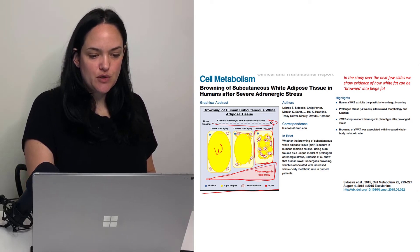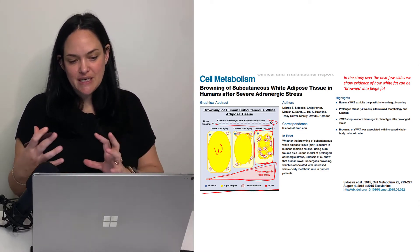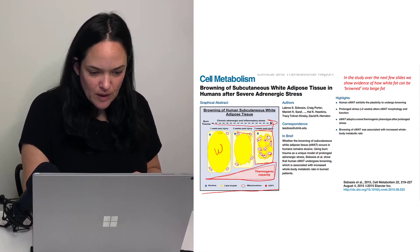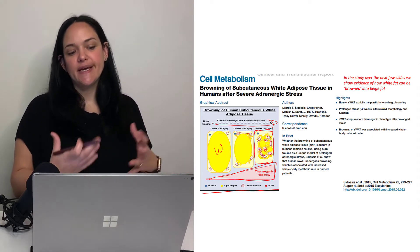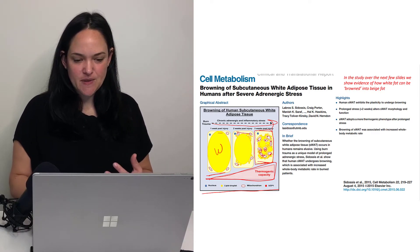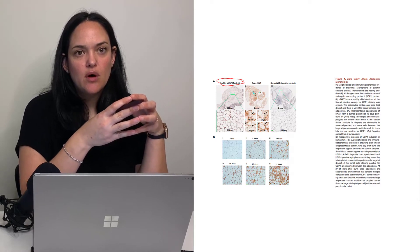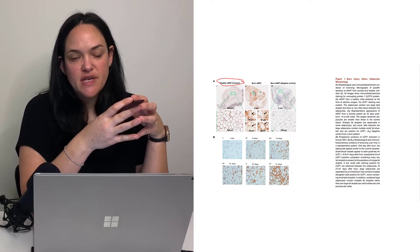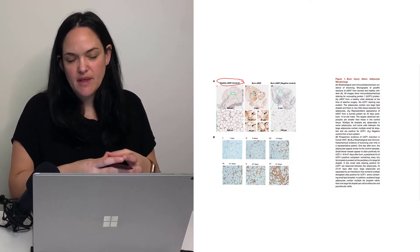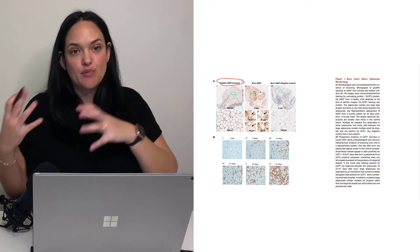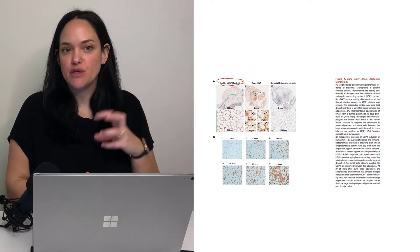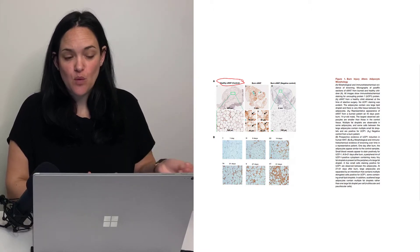Looking at one week post burn, two weeks post burn, and three weeks post burn, we see an increase in that brown-like appearance. The red dots represent UCP1, and we see an increase in UCP1 from zero to more with these beige fat cells. Here we look at histological tissue samples from healthy controls and from individuals who have gone through burns — the stress that has promoted the browning of adipose tissue — as evidence to support that we do see the browning of these formerly white adipocytes.